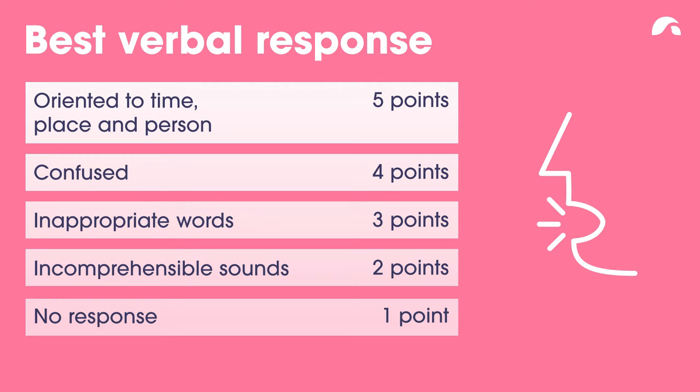Verbal response. Does the person know when it is, where they are and who they are? Five points. Are they confused — was their answer to the time, place or person incorrect? Four points. Do they respond with the wrong word to your questions? Three points. Is the person making only incomprehensible sounds or moans? Two points. Is the person not making any noise? One point.